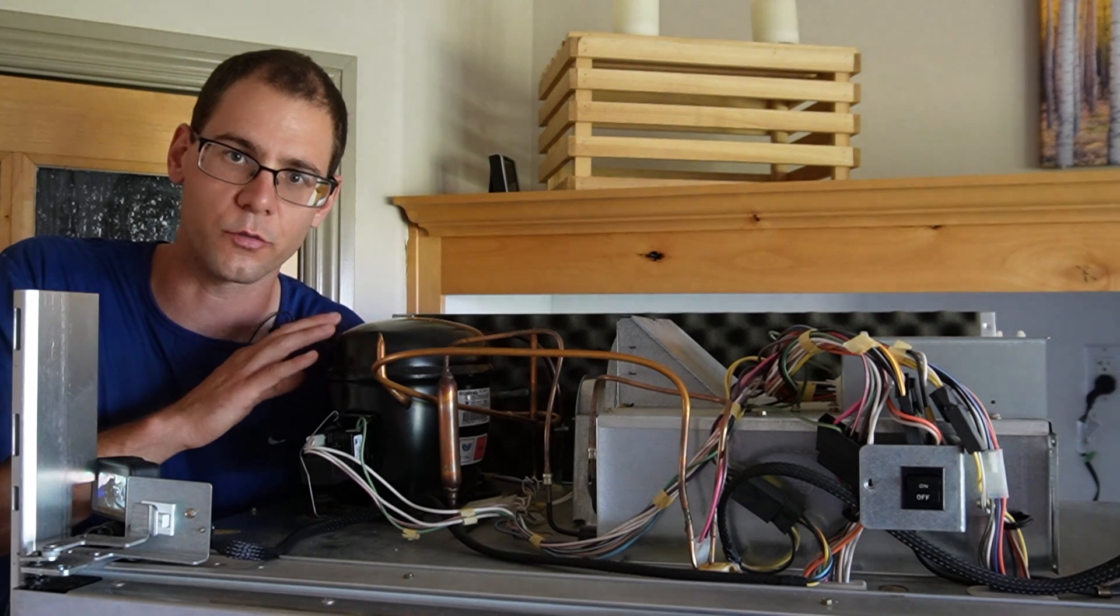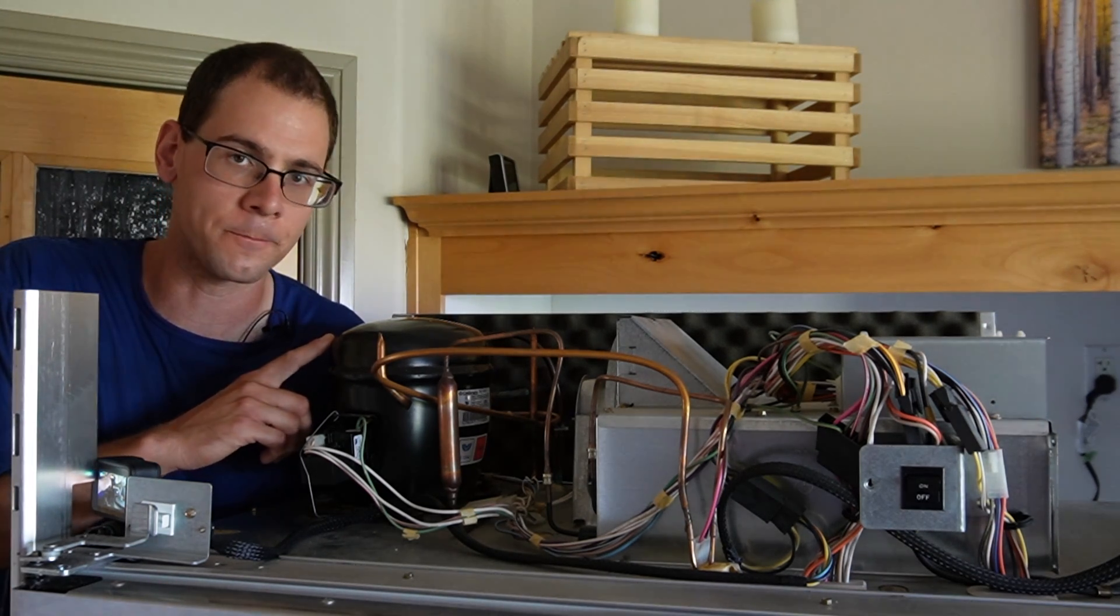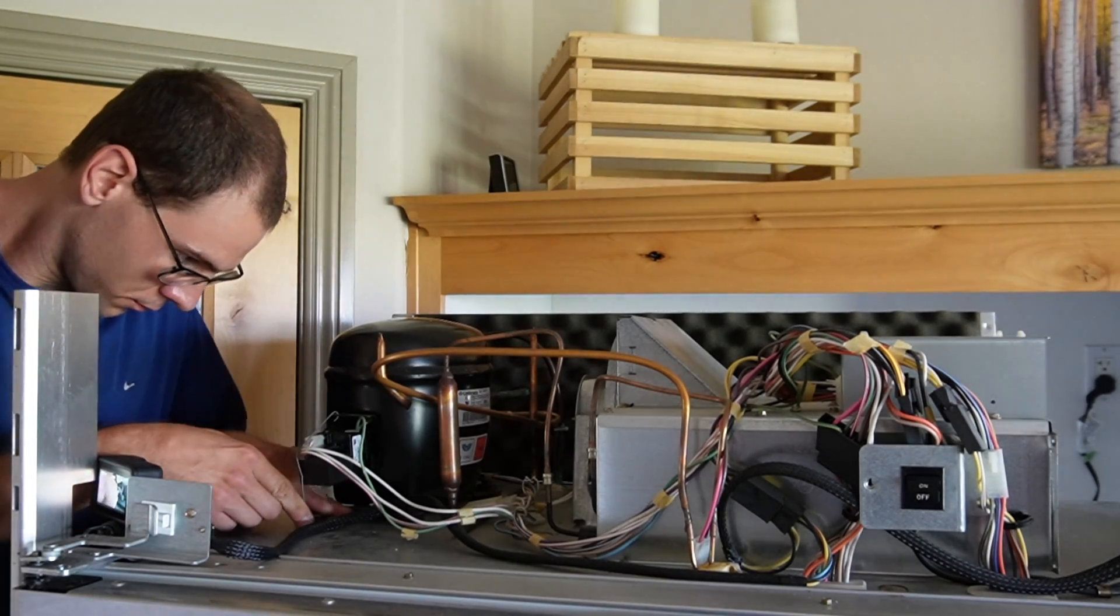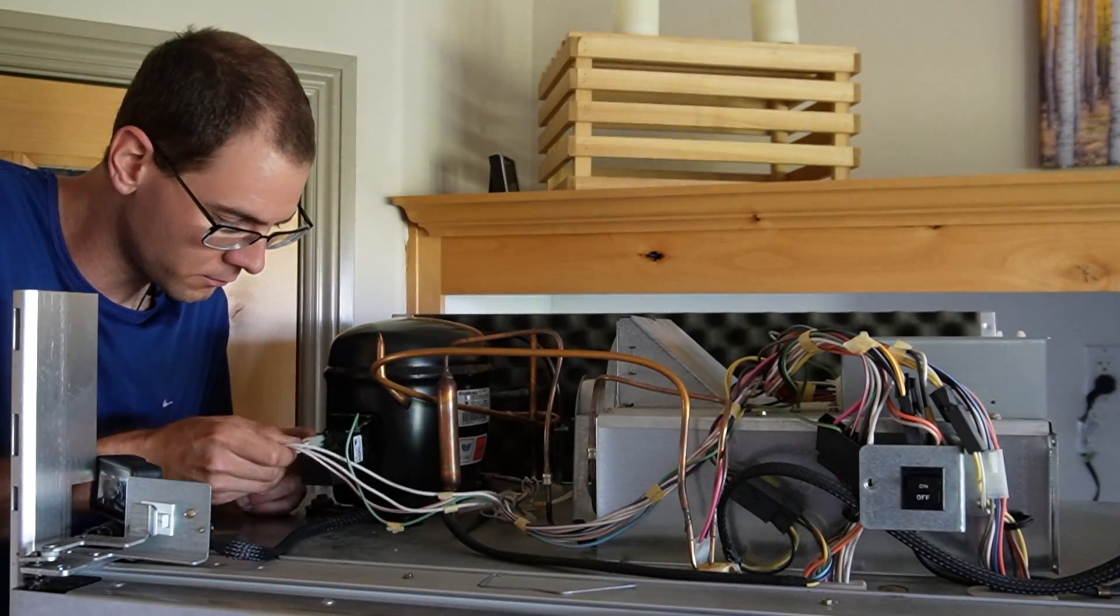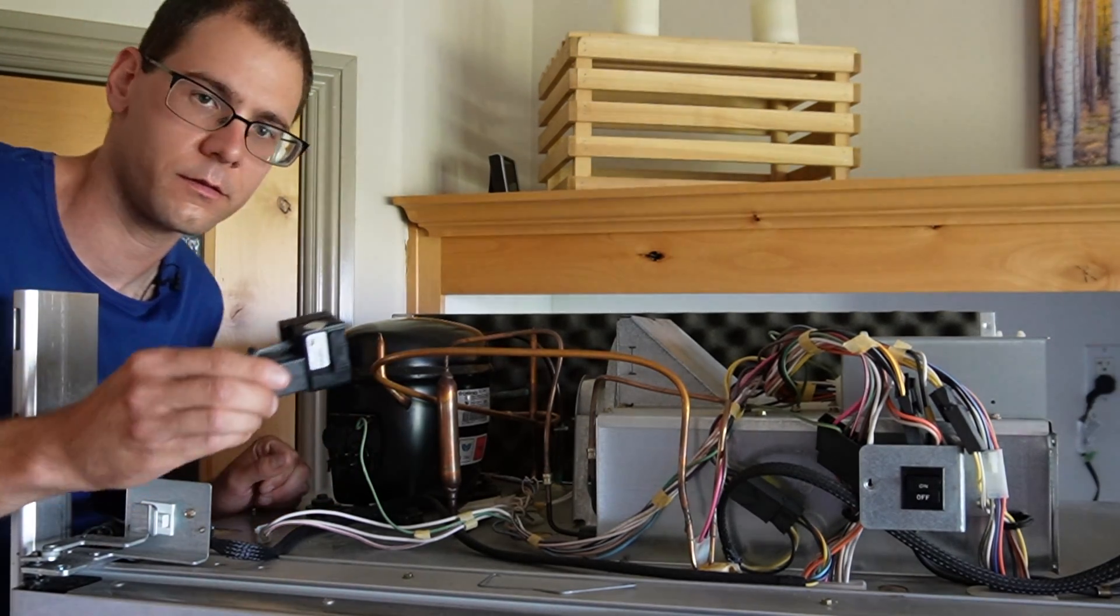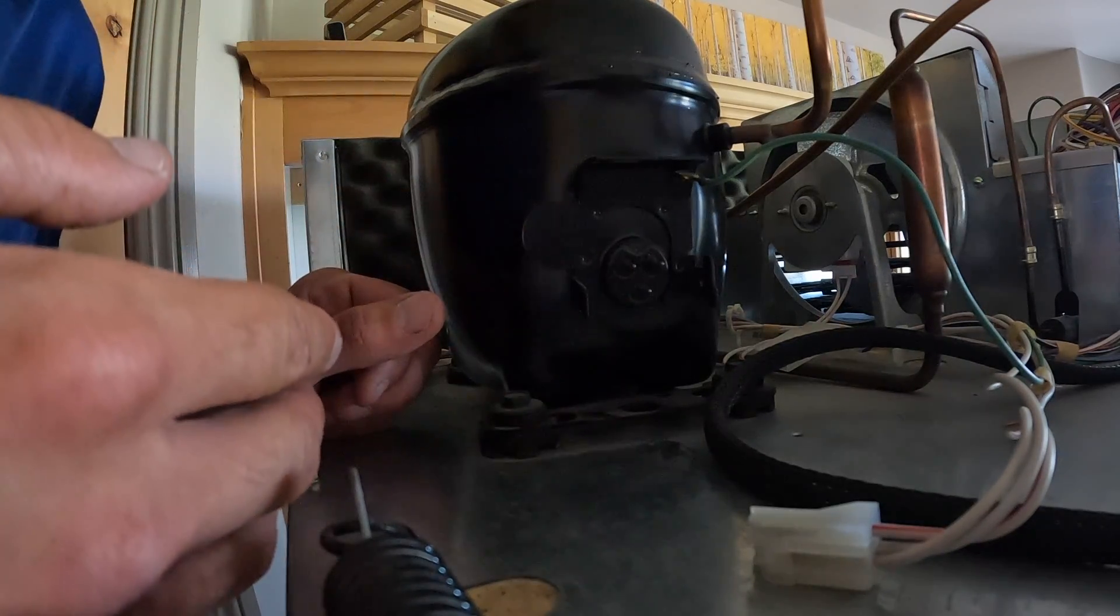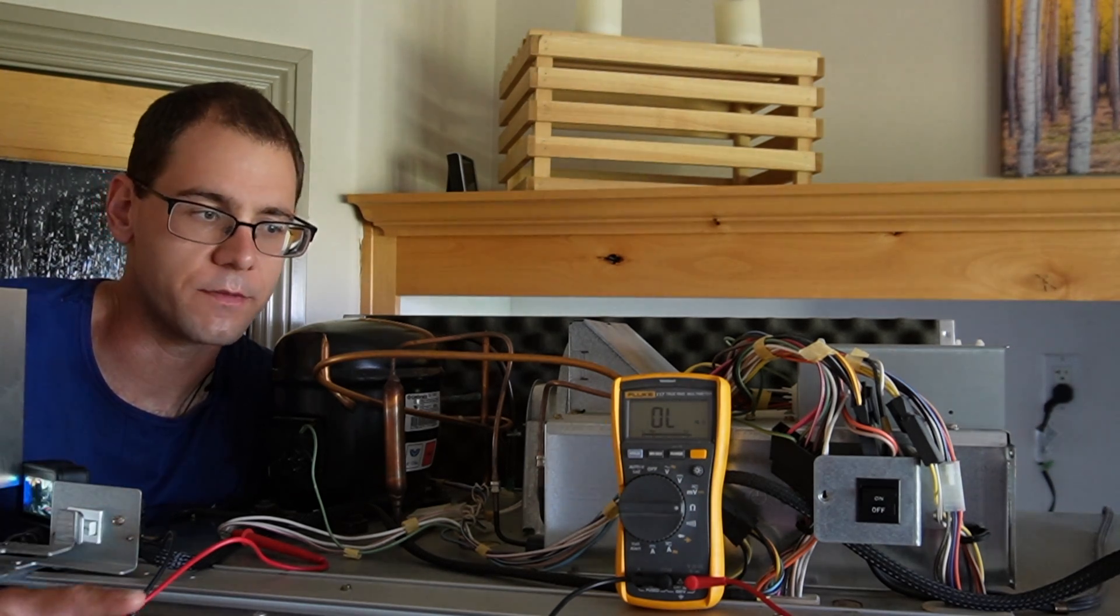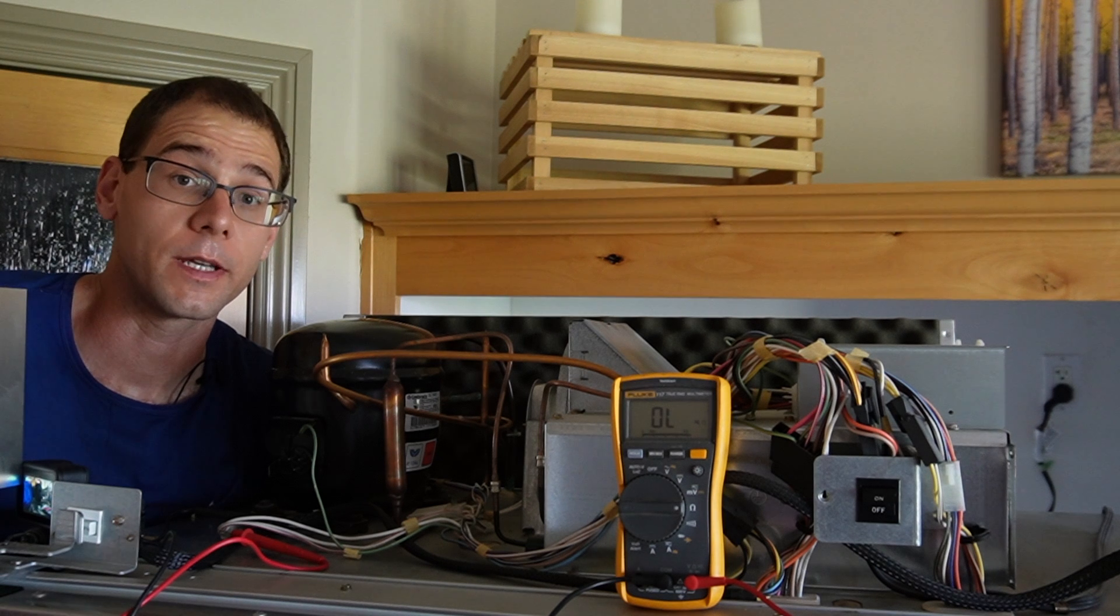Now that we understand how this compressor works, we need to access the common, start, and run terminals so we can take measurements across them to figure out whether the compressor is okay internally. We do that by removing this relay that attaches to those three terminals. This relay is held on by a little metal clip which comes off very easily. Then we have the power cord that sends power to the relay. And finally, we just have to wiggle this free. That's the relay with the run capacitor attached to it. Now we have access to these three leads.